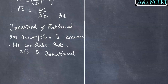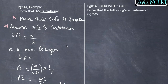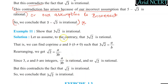The steps will be similar for all such problems. Step 1: Prove that. Step 2 is the Contrary — assume 3√2 is Rational.